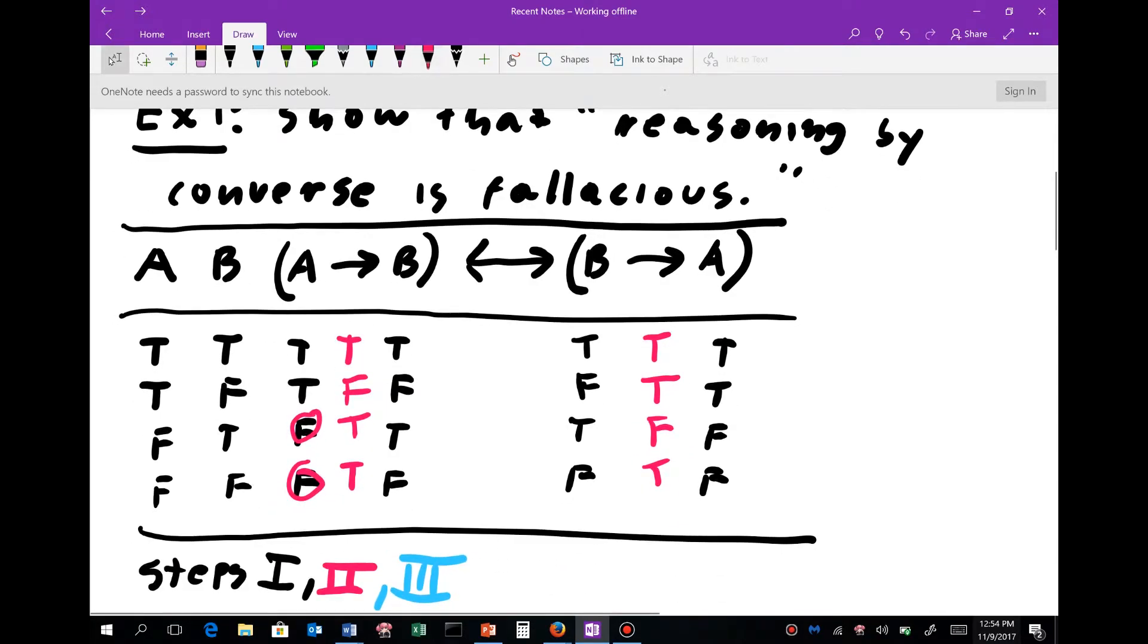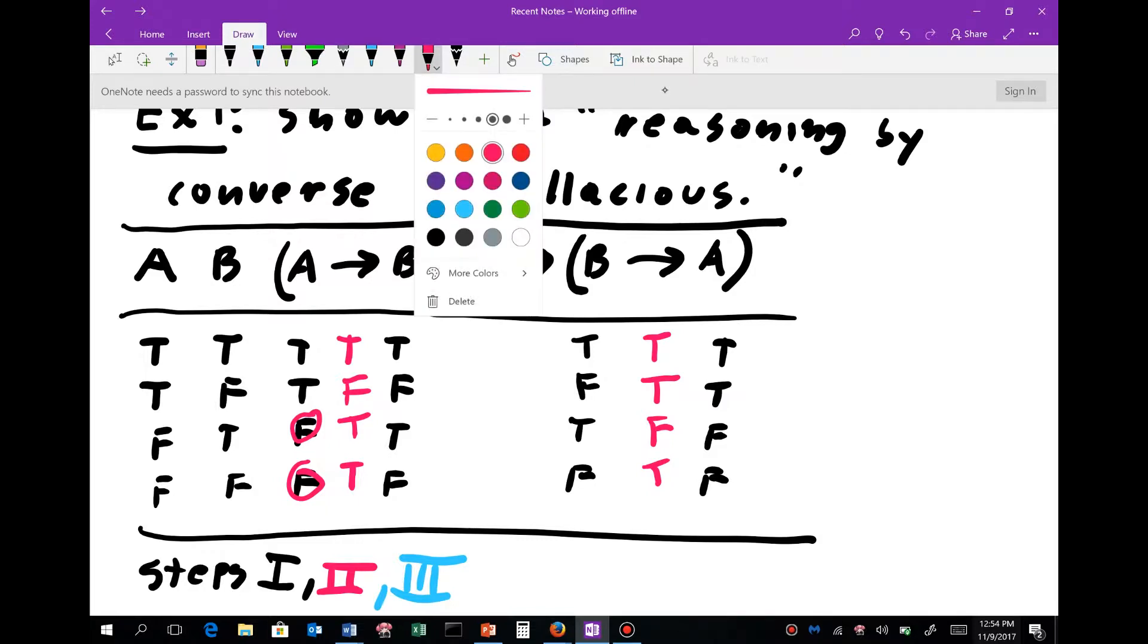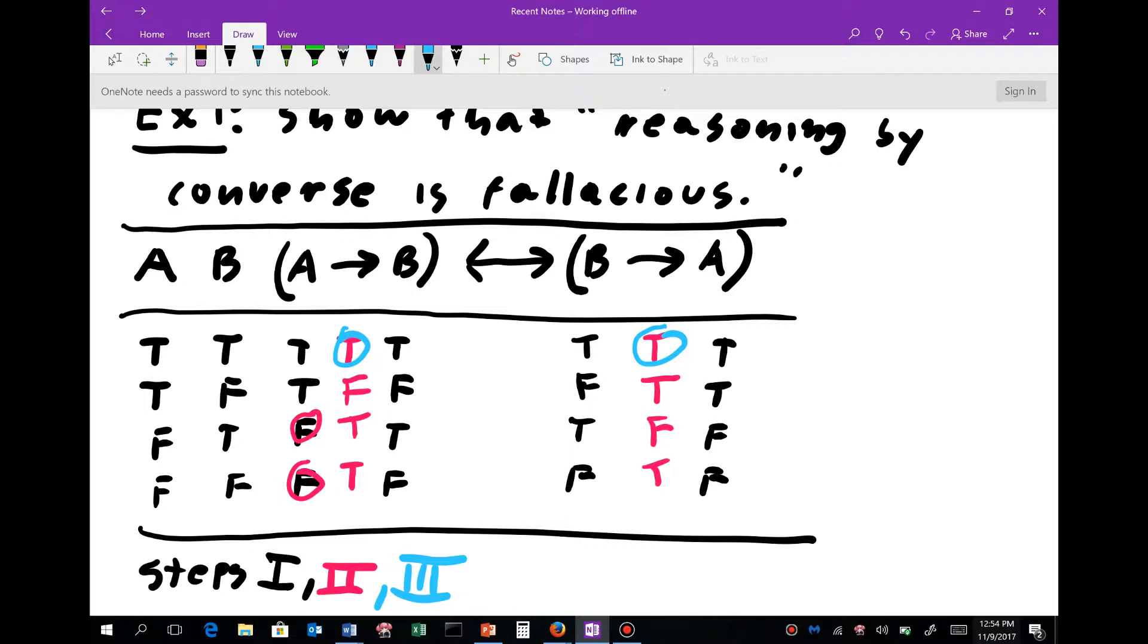And I'll do step three in sky blue. So here we have a true, and here we have a true. These are logically equivalent truth values, so this is true. So I'll put a little check mark, good so far.